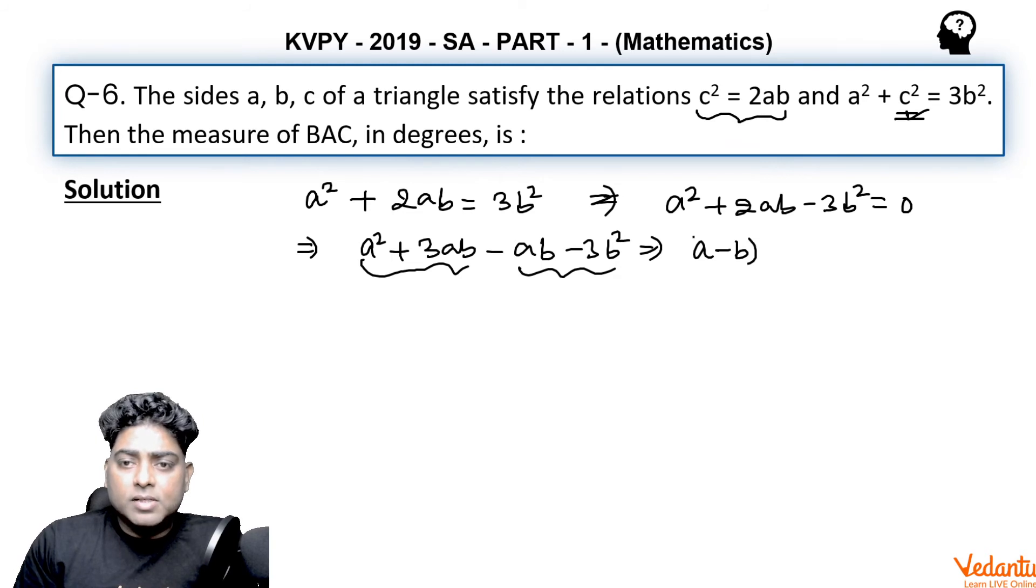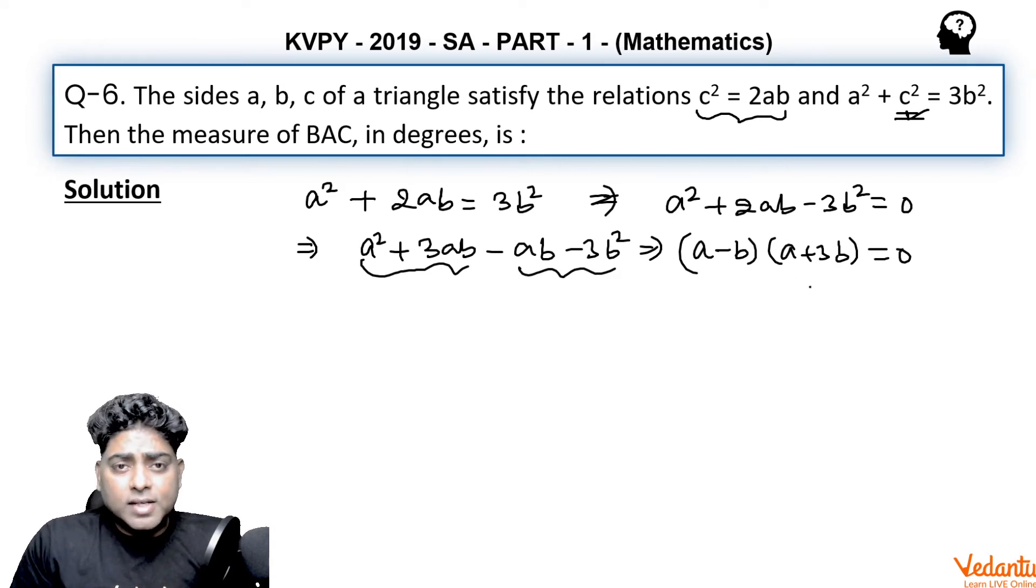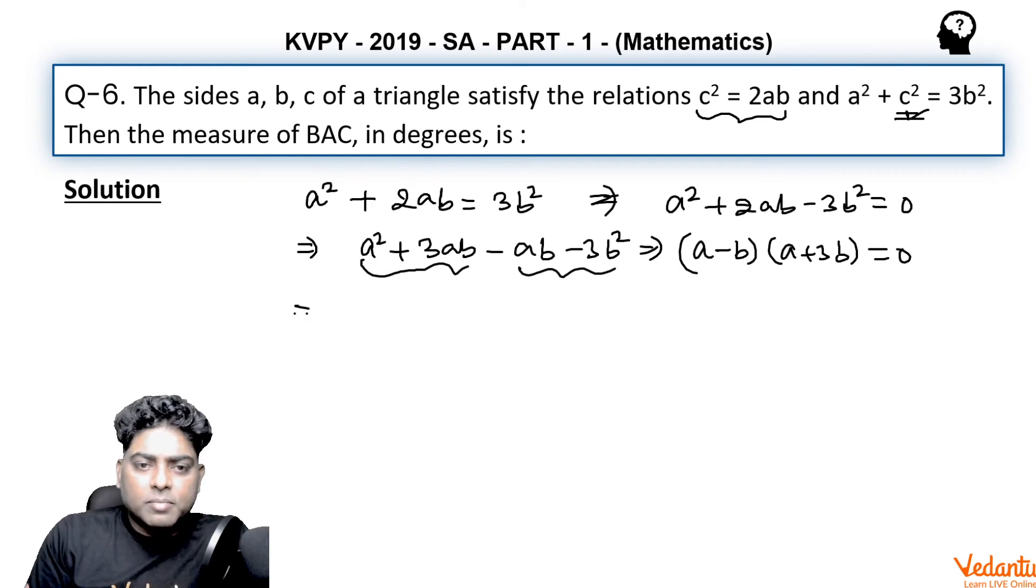So A minus B is coming and A plus 3b is coming as two factors. But as we know that the sides of a triangle can never be negative or 0, so A plus 3b is always positive. So this factor is not going to be 0. So it implies the first factor A minus B is 0, which says A equal to B.